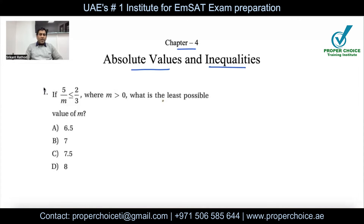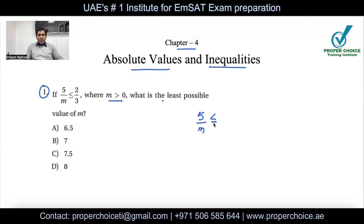Question number one: if 5/m ≤ 2/3, where m > 0, what is the least possible value of m? They are asking what would be the minimum value m can have to make this condition true. So take it as is: 5/m ≤ 2/3.